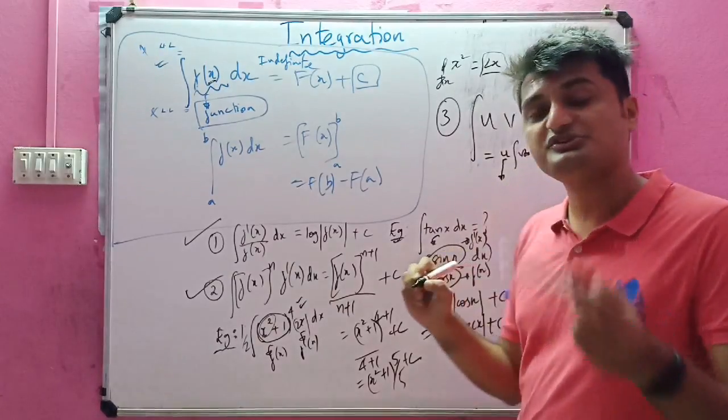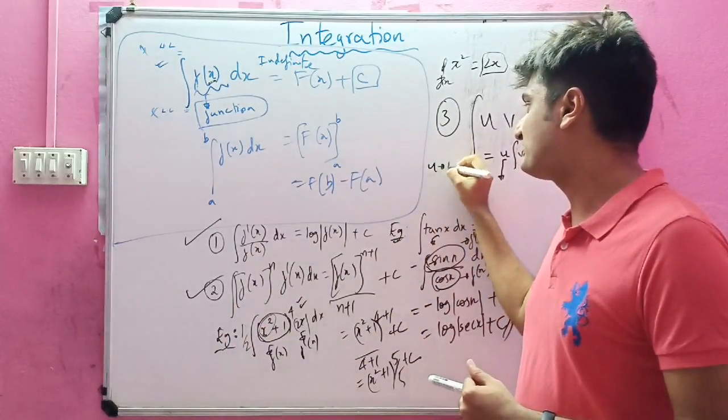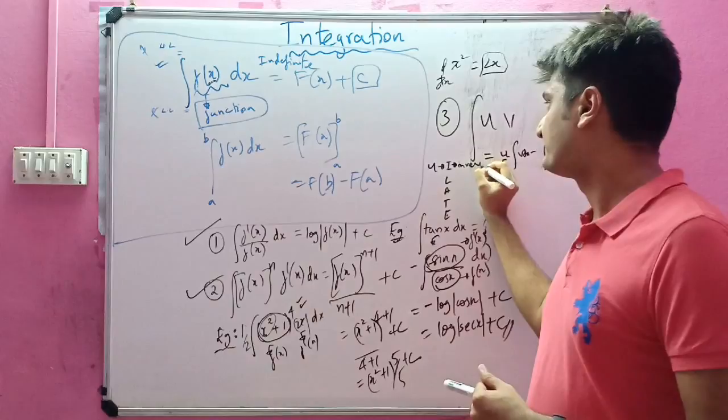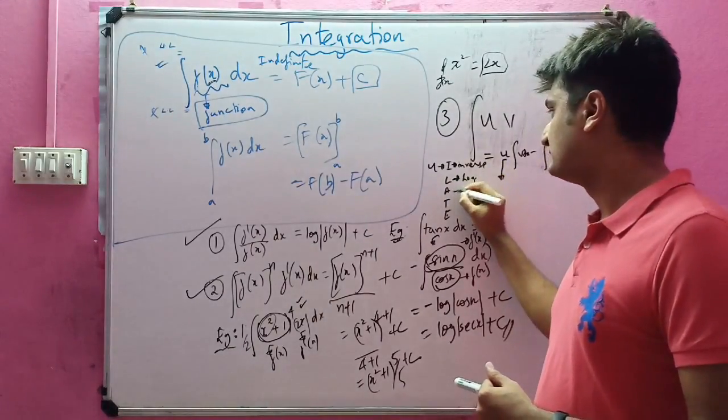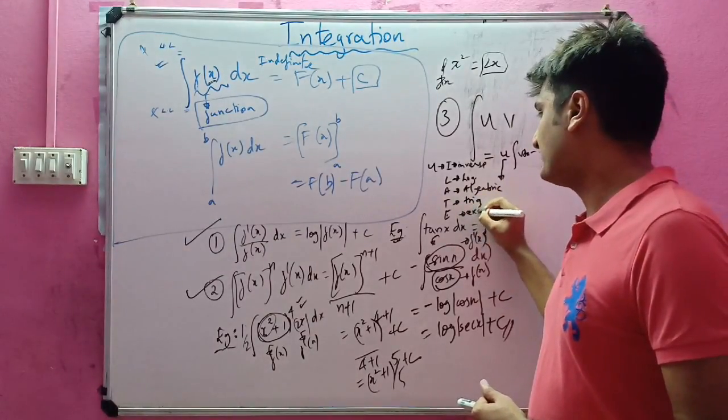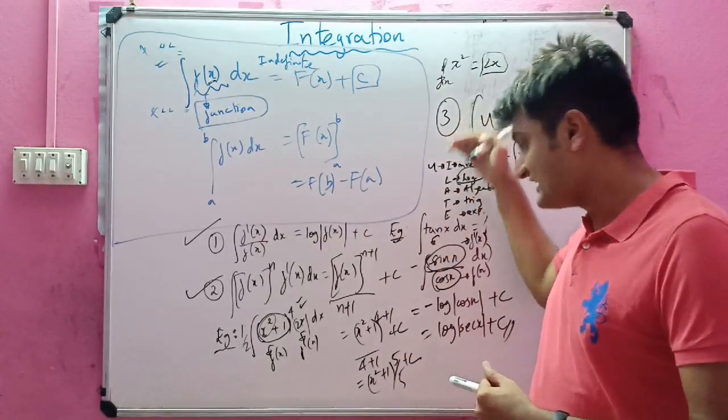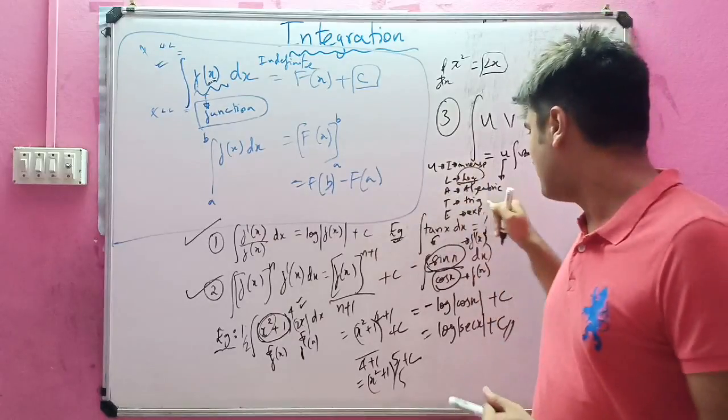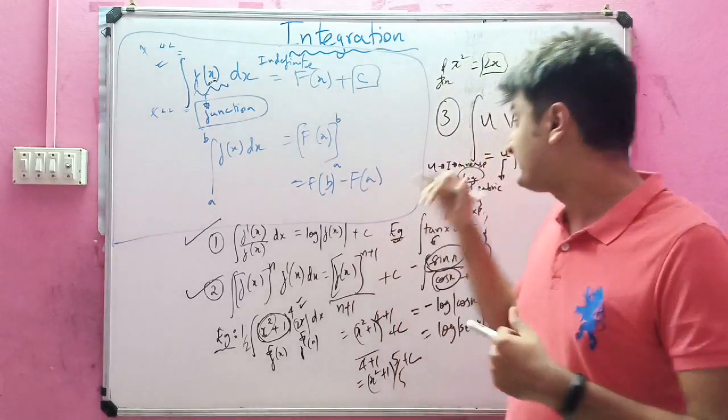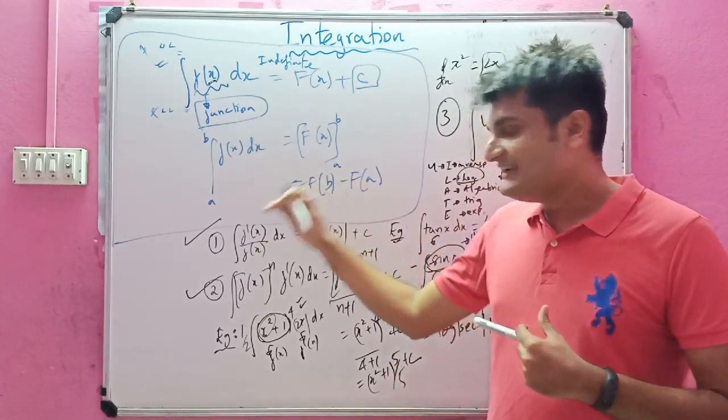To choose now, our next question should be what to choose? Whether it should be u or v. For choosing u or v we have something called ILATE, where I stands for inverse, L stands for logarithmic, A stands for algebraic, T stands for trigonometric, E stands for exponential. Suppose we have a logarithm function and an algebraic function, we have to choose logarithm first in the same order. Our u will be logarithm. If we have a trigonometric and an exponential function, u will be trigonometric, v will be exponential. In this way we can apply uv rule to find out the integral. These are the three basic rules.